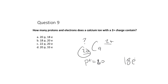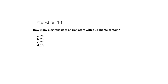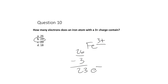So calcium 2+ has 20 protons and 18 electrons. If you have more protons than electrons, the atom has a net positive charge; more electrons than protons gives a negative charge. For iron with a 3+ charge: iron is element number 26, so it has 26 protons. Three fewer electrons gives 23 electrons.